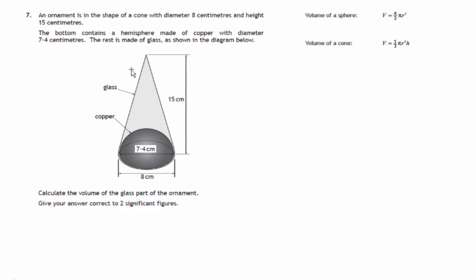We're given an ornament in the shape of a glass cone, but at the base of it, removed, is a hemisphere, half a sphere, of the glass, and that's been replaced by copper, presumably to make it heavier so that it can sit better. So we're asked to work out the volume of the glass in this ornament.